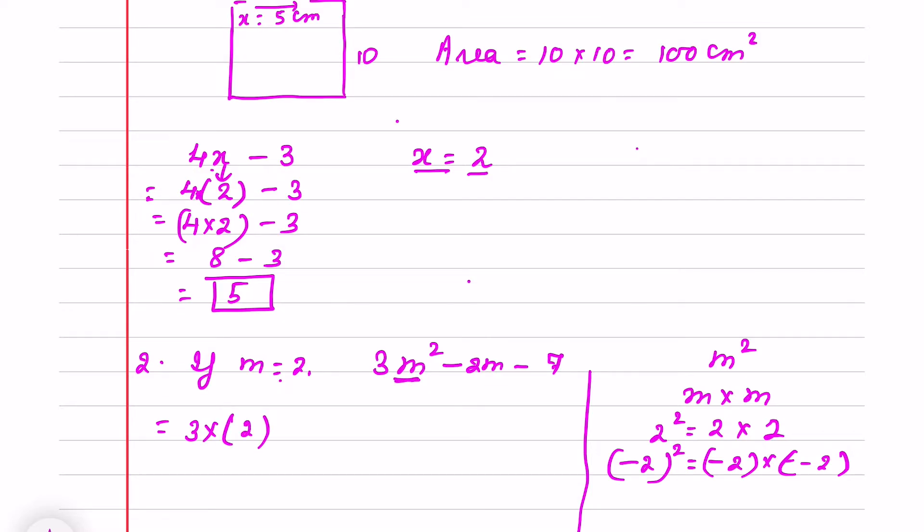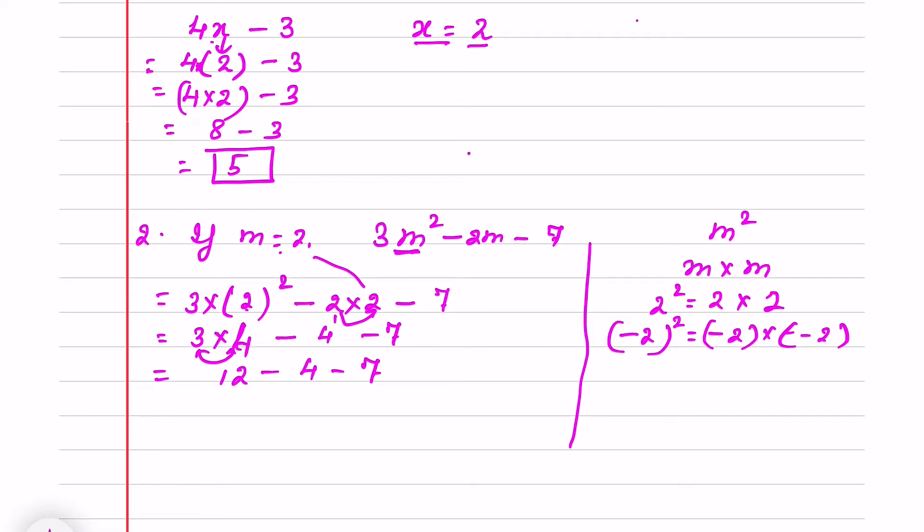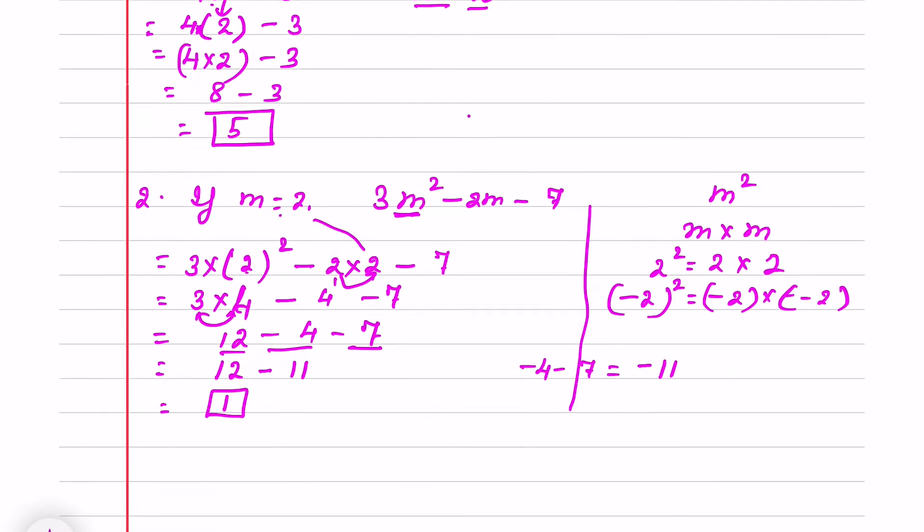Wherever m is there, I will put 2. So it is 2 square minus 2 into m. m is what? 2. Minus 7. Now I will simplify it. 2 square is 4. Minus 2 into 4 minus 7. Now again simplification. 3 into 4 is 12. Minus 4 minus 7. So when we simplify it these two are negative integers. So what we will do? We will add but the sign will be negative. I think all of you remember that minus 4 minus 7 will be minus 11. So now again 12 minus 11 will be 1.